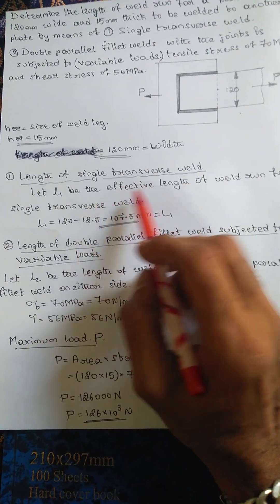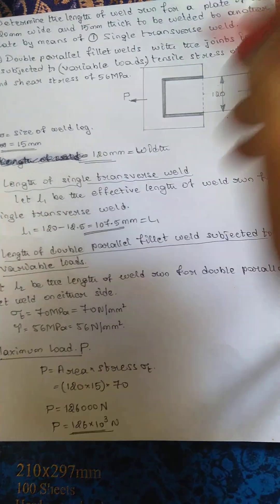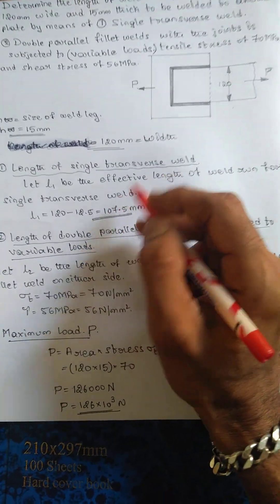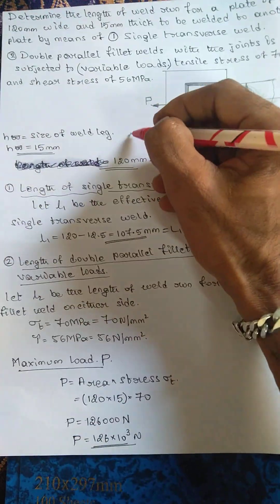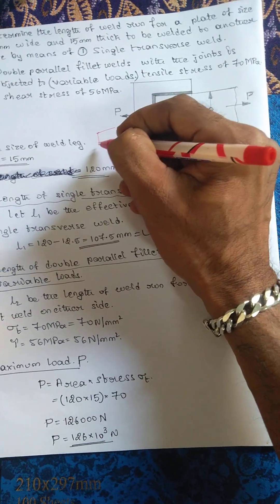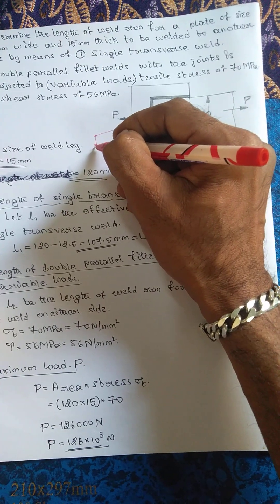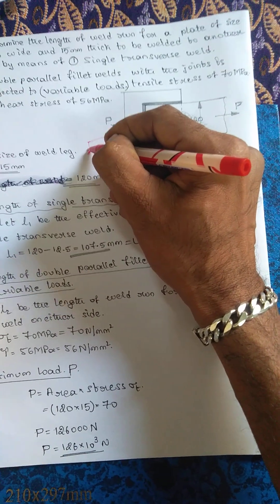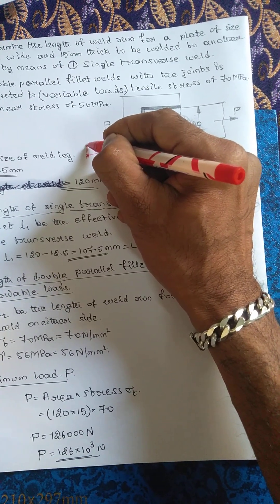The length of single transverse weld is this one, this length is given that is 120. Here there is a matter which commonly we use in welding - when we start welding, if this is the plate, welding is not carried directly on the edge but it is carried a little before the edge. And ending also we will not stop it at the end but we will carry out a little further.